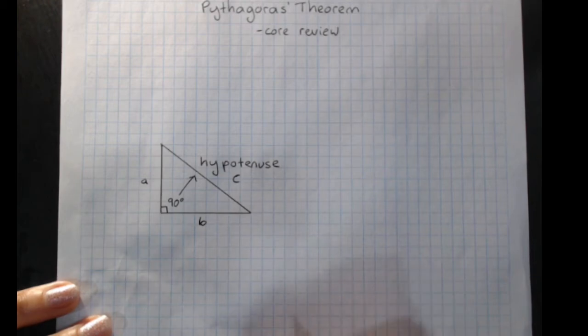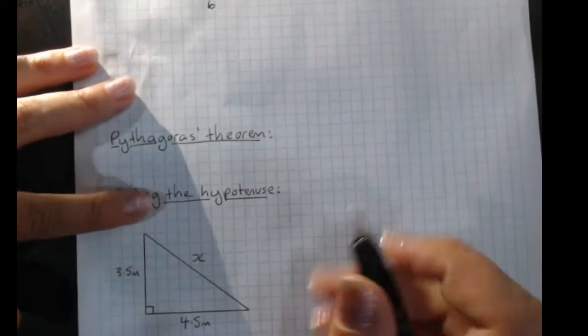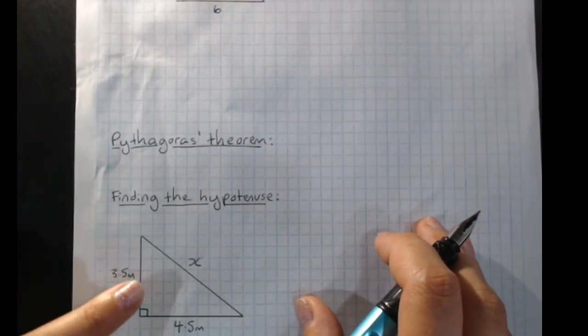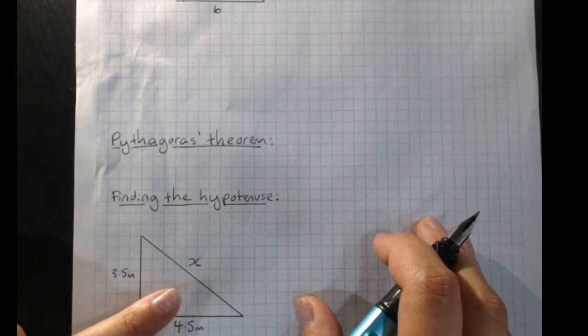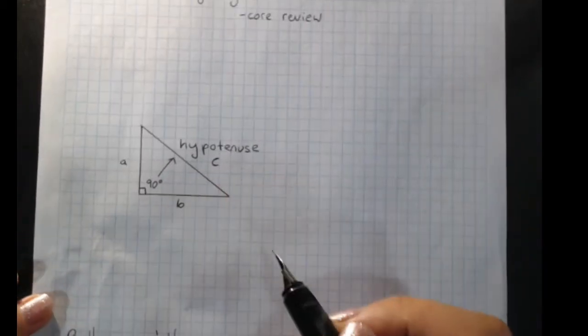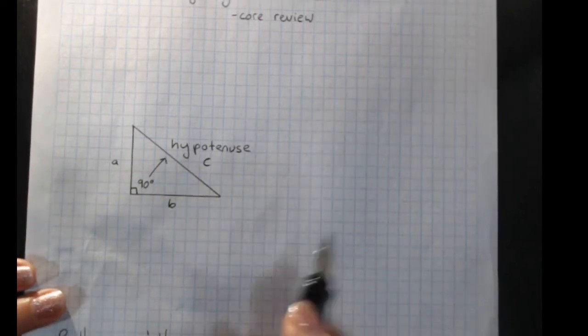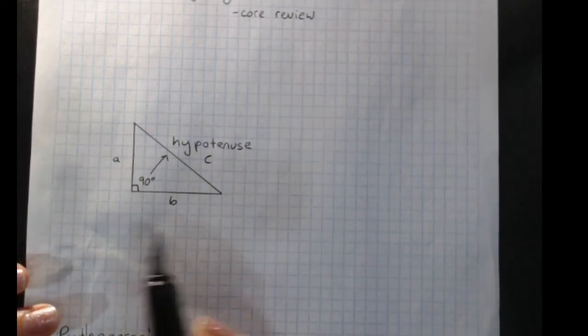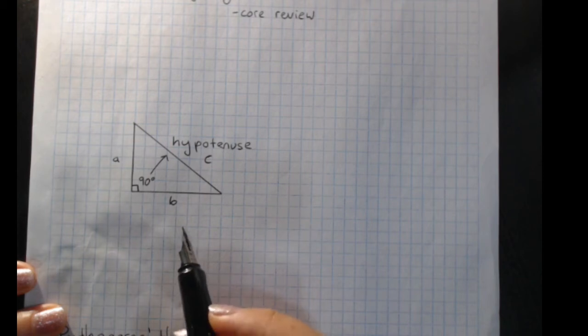Sometimes in questions, people will call it other things. So we've got a question down here, and they've called the hypotenuse X. And that's fine, but in our formula, we start with it as C. And so we'll look at what the formula is, but what it means as well.